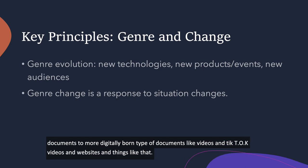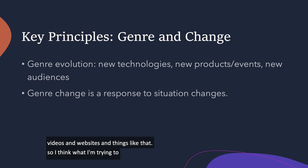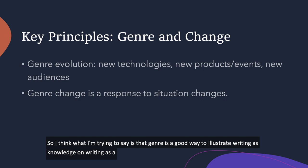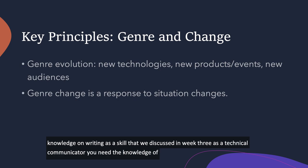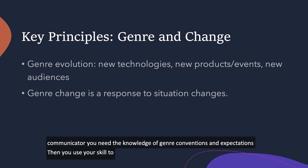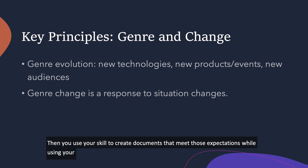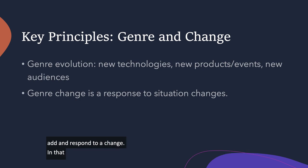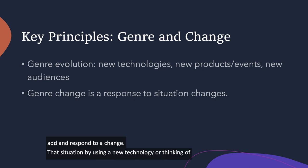Genre is a good way to illustrate writing as knowledge and writing as a skill, which we discussed in week three. As a technical communicator, you need the knowledge of genre conventions and expectations, then you use your skill to create documents that meet those expectations, while using your creativity to respond to the rhetorical and social situation — and maybe respond to a change in the situation by using a new technology or thinking about a new audience.